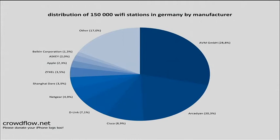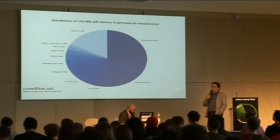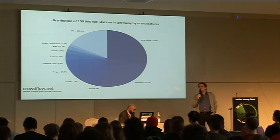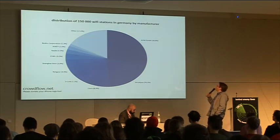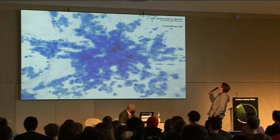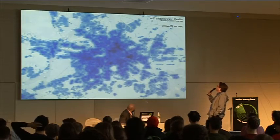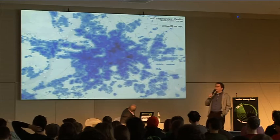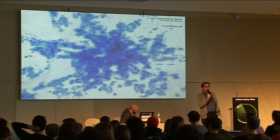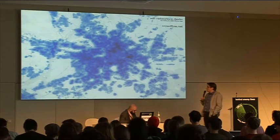150,000 Wi-Fi stations are here in Germany, and you can use the MAC address to find out who the manufacturer is. You can make a chart and you can see that AVM — manufacturer of the Fritzbox, the DSL Wi-Fi station — is the most popular, then Akkadine, Cisco, D-Link, Netgear. This is a map of Wi-Fi stations in Berlin — probably a million. In total we have 30 million Wi-Fi stations and you can download it — it's a 1.5 gigabyte file — on crowdflow.net.